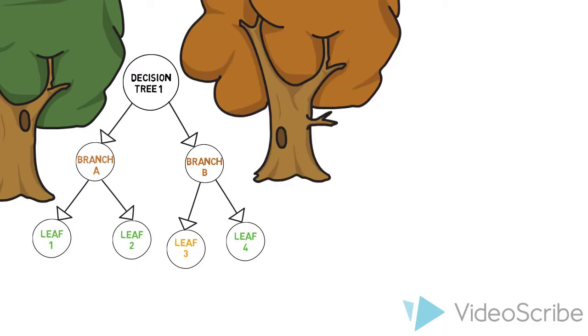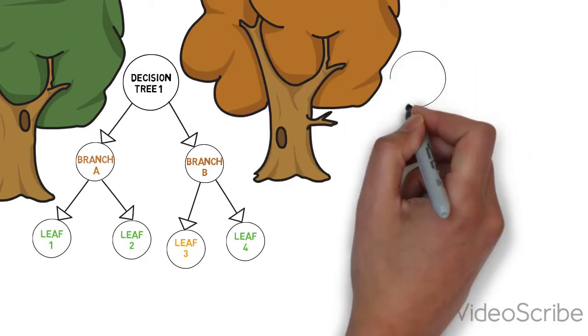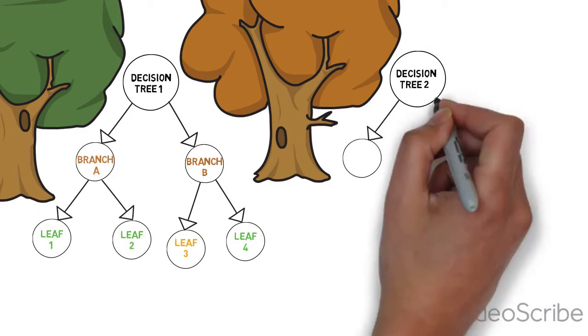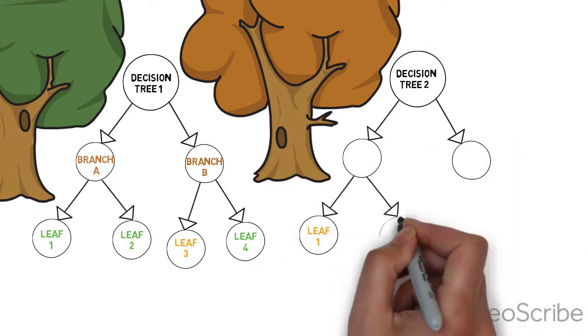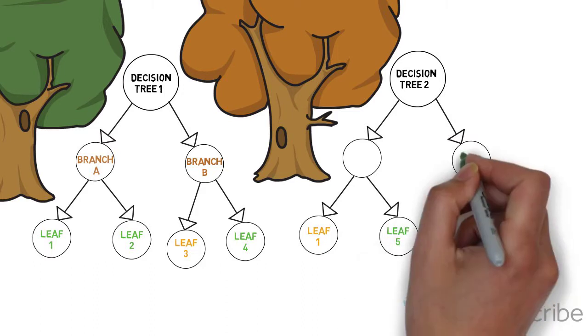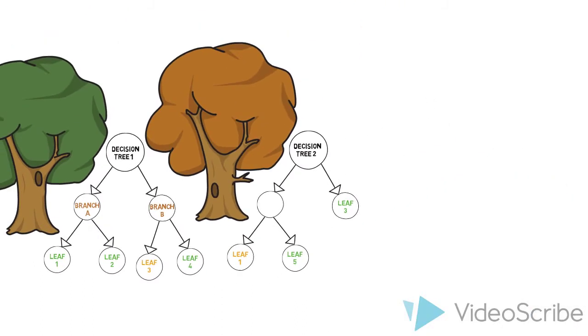But normal cases aren't that easy. Usually, datasets are much messier, which means we need to split our data many, many times and build a really complex decision tree. The problem is, we risk overfitting. This is when random forests come into the party.